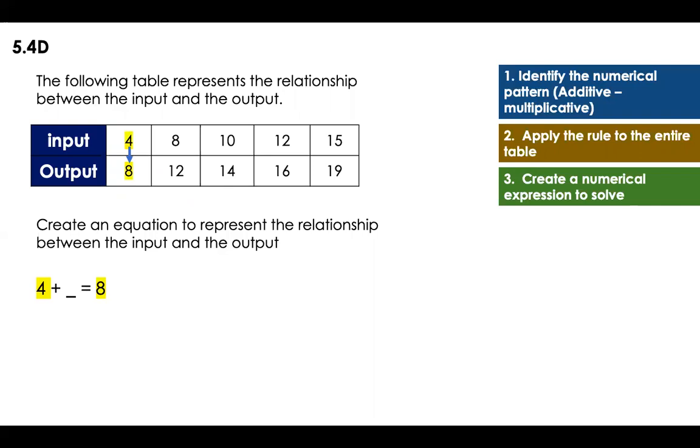In this case, first, I'm going to start with my first column because before we started with the first row, here we're going to start with the first column. Four to get to eight. Four plus something to get to eight or four times something to get to eight. Here will be four plus four to get to eight or four times two to get to eight.